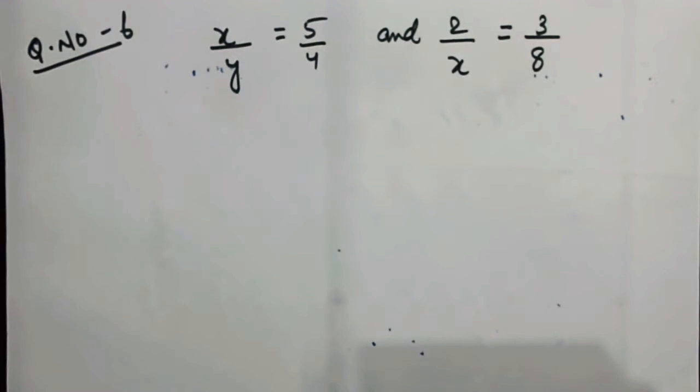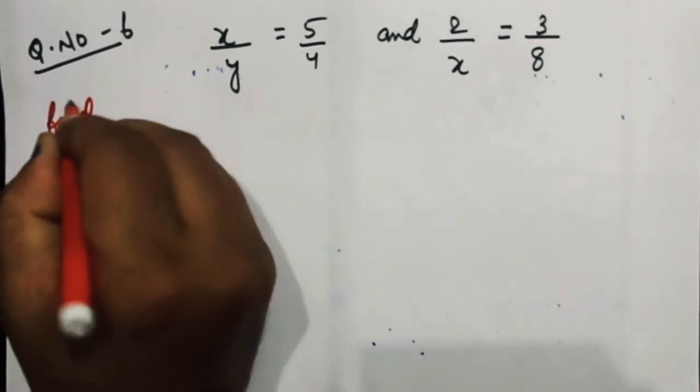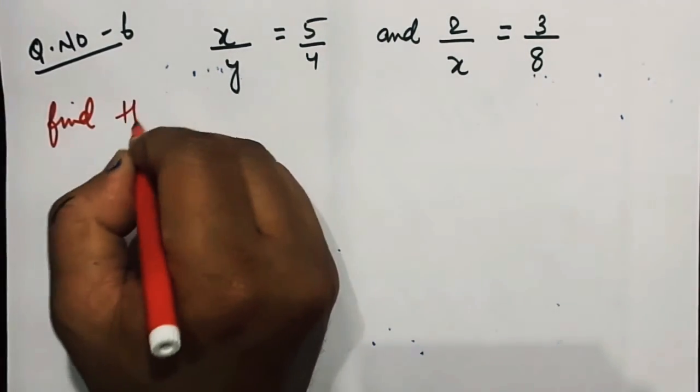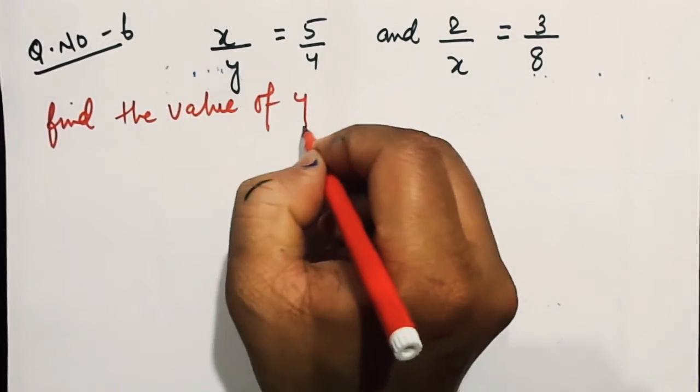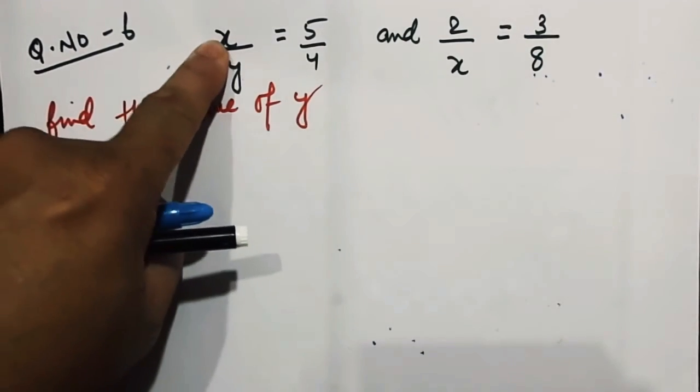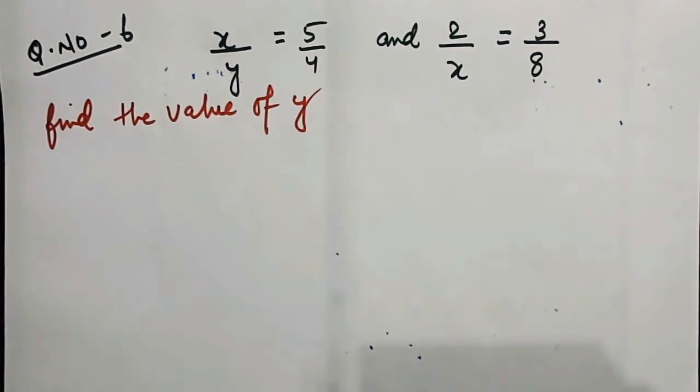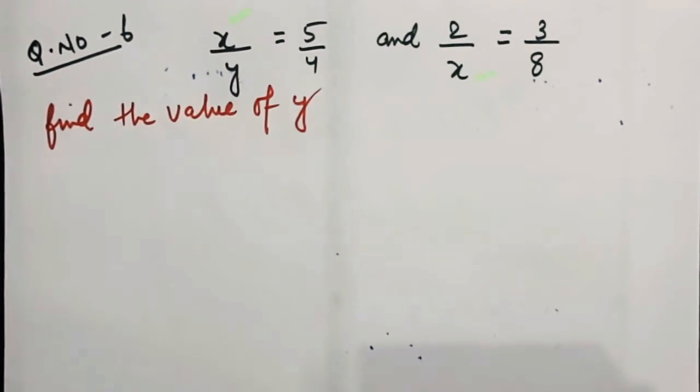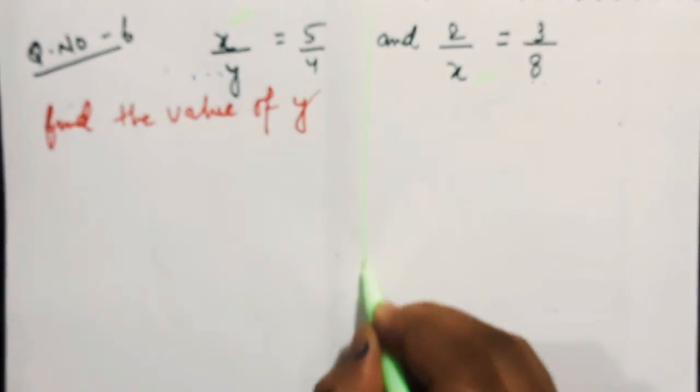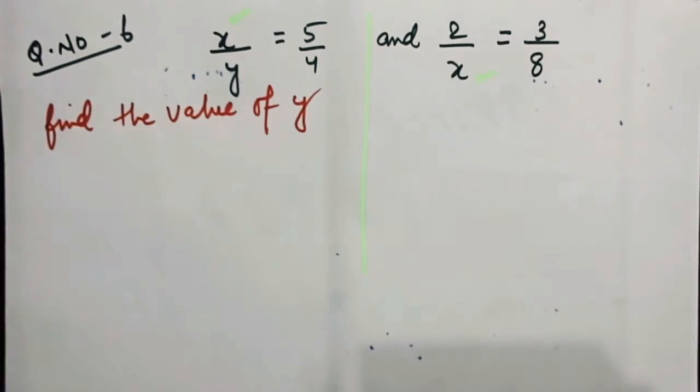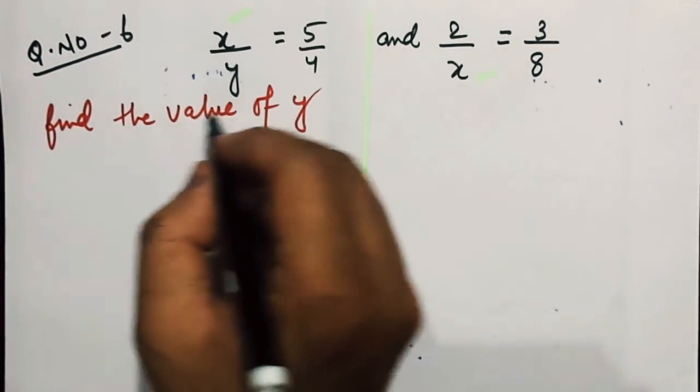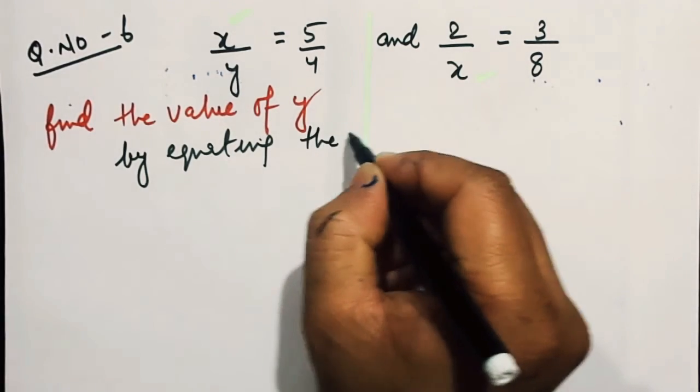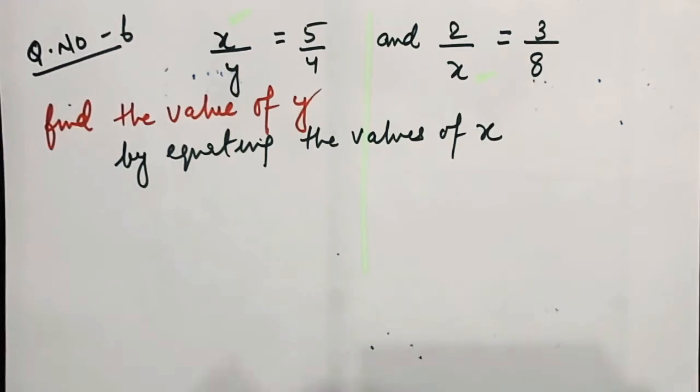What are they asking? They are asking, find the value of y. x is over here also, x is over here also. They need to find the value of y. How are we going to find the value of y? By equating the values of x.